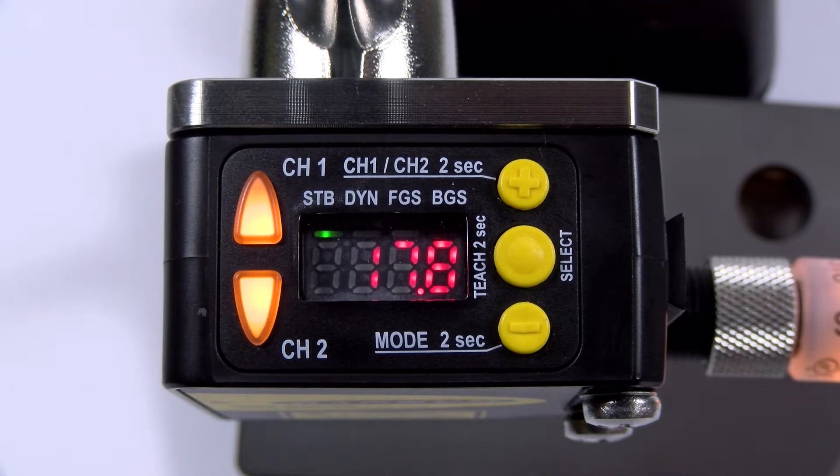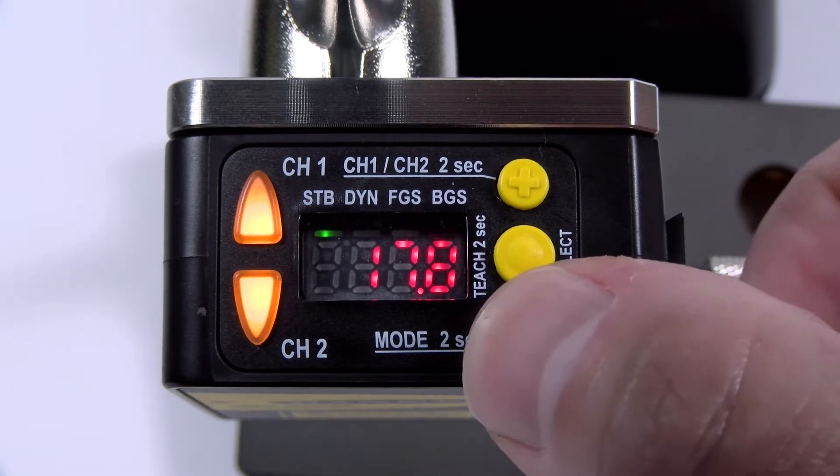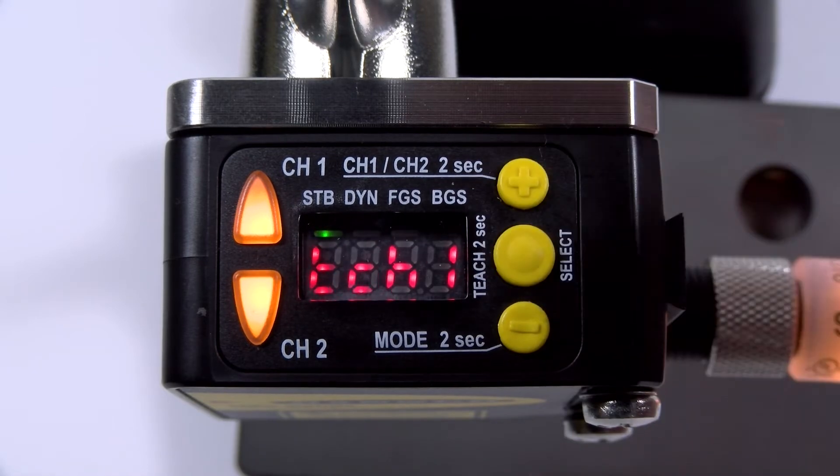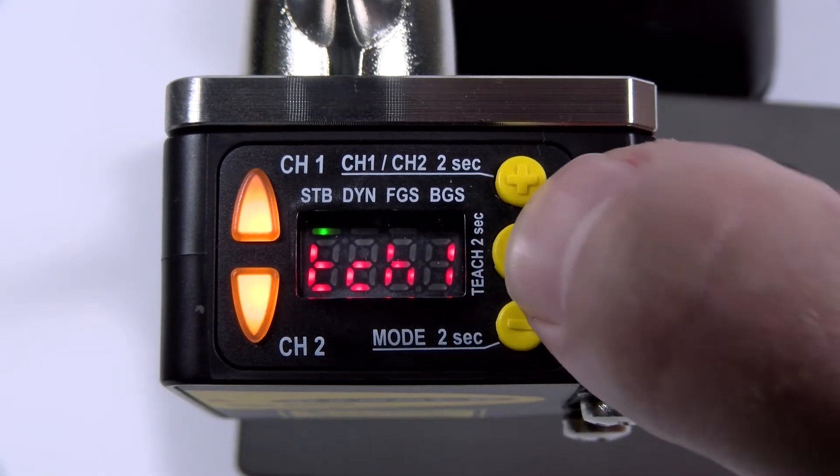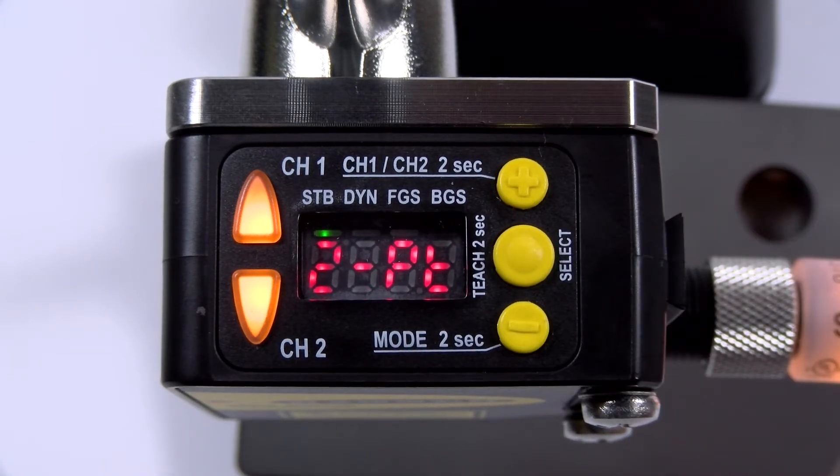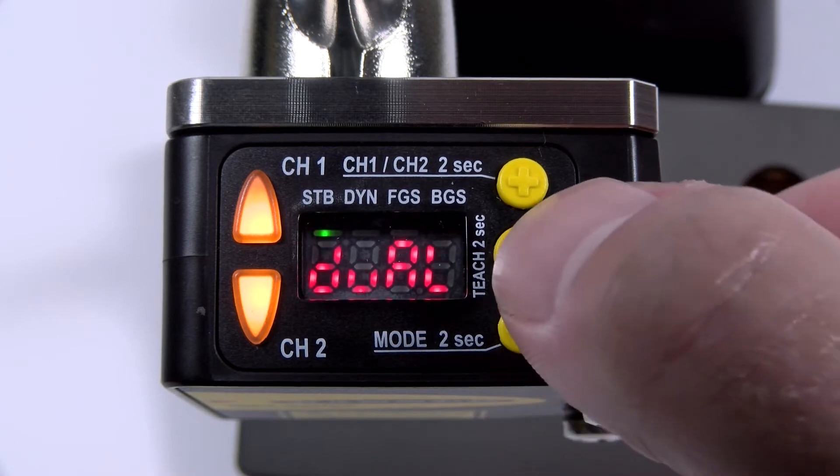To put the sensor into dual mode, press and hold the minus button for more than two seconds. Press the plus button once and you'll see teach one on the screen. Press the middle button to select and then toggle either the plus or minus button until you see dual on the display.